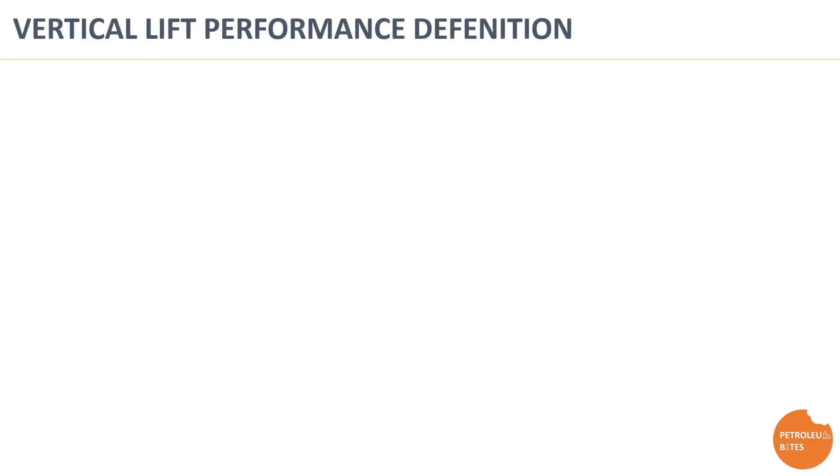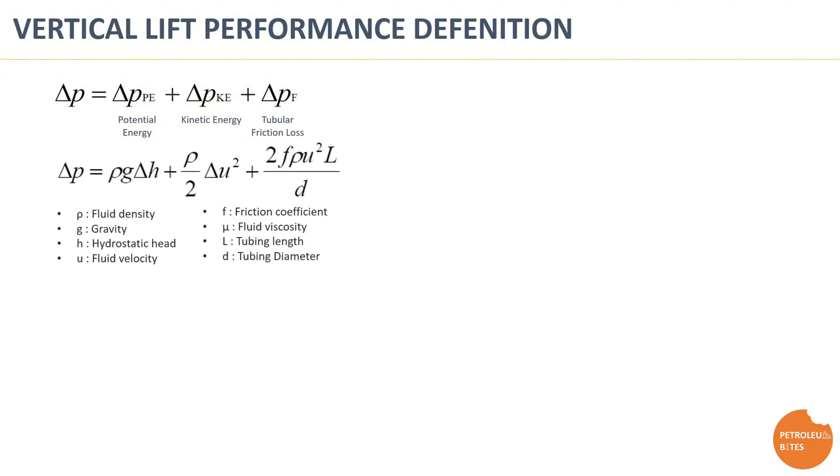Now let's shift to Vertical Lift Performance or VLP. VLP describes the relationship between the flow rate and the pressure required to lift fluids from the reservoir to the surface, considering the frictional losses in the wellbore. In essence, it models how much pressure is needed to lift fluid through the tubing, factoring in the wellbore condition and the fluid properties, as shown in the following equation.